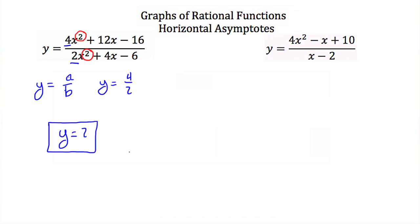For y = (4x² - x + 10) / (x - 2), the degree of the numerator is 2 and the degree of the denominator is 1. Since the numerator has a higher degree than the denominator, this rational function has no horizontal asymptote.